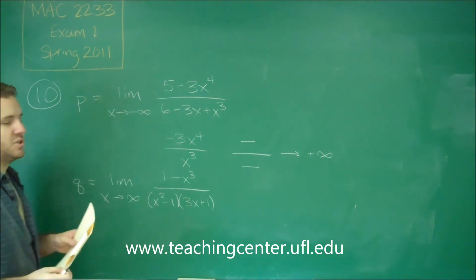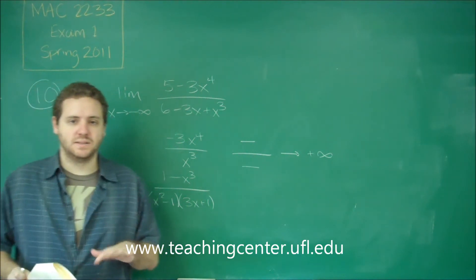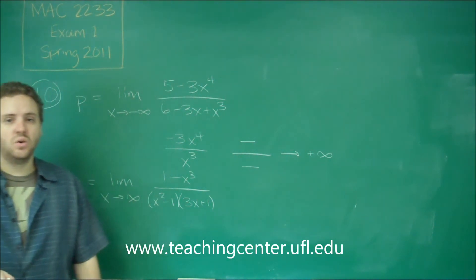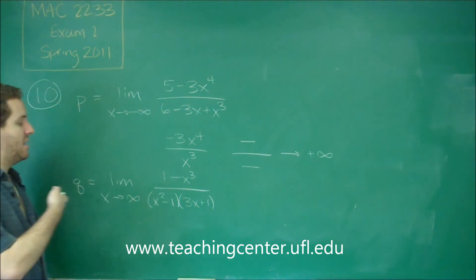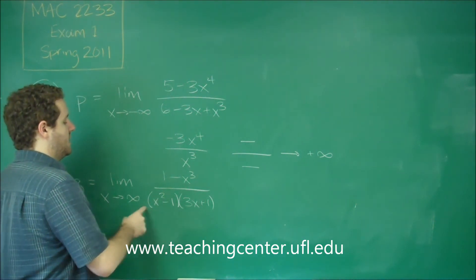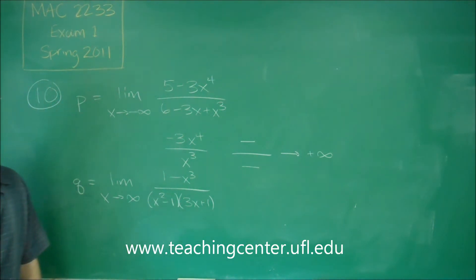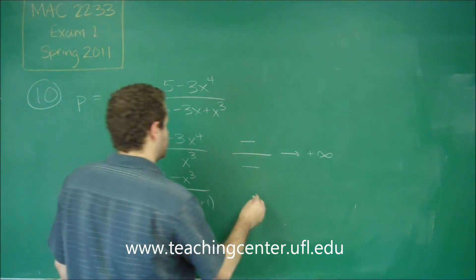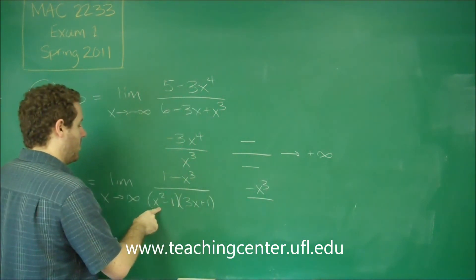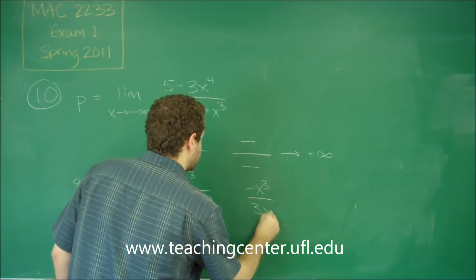So again, we have a rational function. All we're concerned about is the degrees. Now the bottom is factored. So what you need to do is just think, if I expanded this, what would the biggest degree term be? You can see here, the biggest degree term you would get is just by multiplying the first two together. X squared times 3X. Everything else would be of smaller powers of X. So really, what we're going to simplify this to is we're really looking at negative X cubed. On the bottom, we would have 3X cubed.